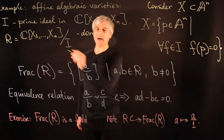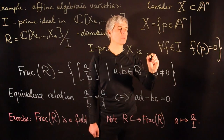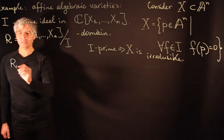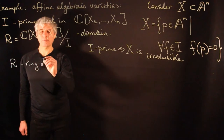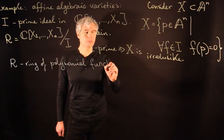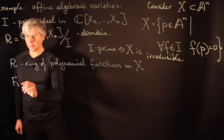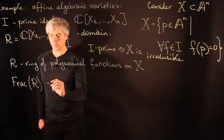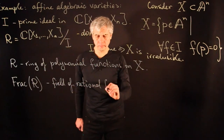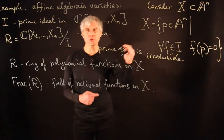The fact that I is prime is geometrically equivalent to X being irreducible. From this geometric point of view, R is the ring of polynomial functions on this algebraic variety. If we take the field of fractions, this will be the field of rational functions on X — that is, quotients of two polynomials.